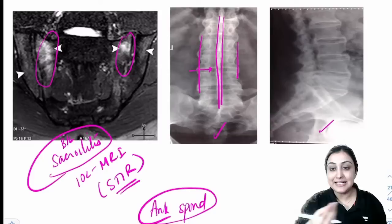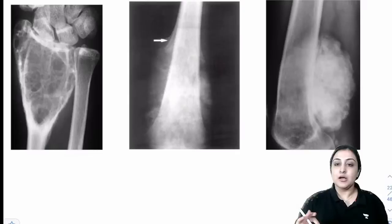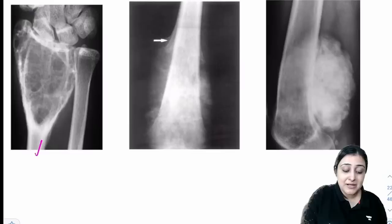Associated features of ankylosing spondylitis: enthesitis (heel pain), uveitis, cardiac valvular anomalies, inflammatory bowel disease. DISH (diffuse idiopathic skeletal hyperostosis) differs: older patient, ossification along anterior longitudinal ligament, no true fusion.